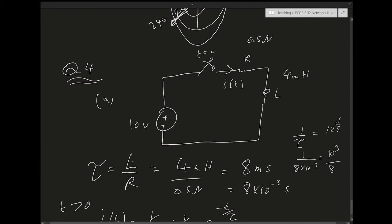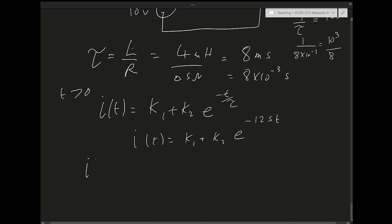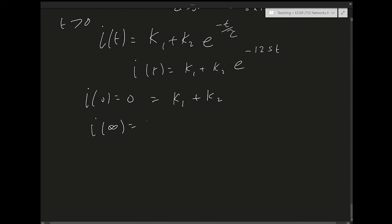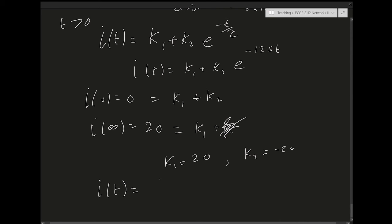Initial condition: when the switch is off, inductor current is zero, so i(0) = 0 = k₁ + k₂. At steady state, the inductor behaves like a short circuit, so i(∞) = 10V / 0.5Ω = 20A. Therefore k₁ = 20 and k₂ = −20. The expression simplifies to i(t) = 20(1 − e^(−125t)) amps.